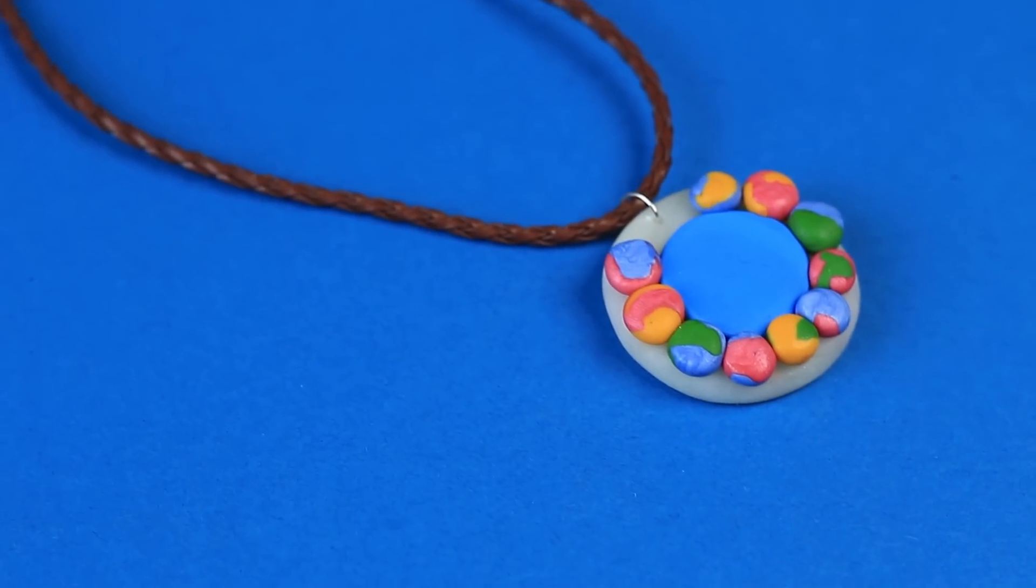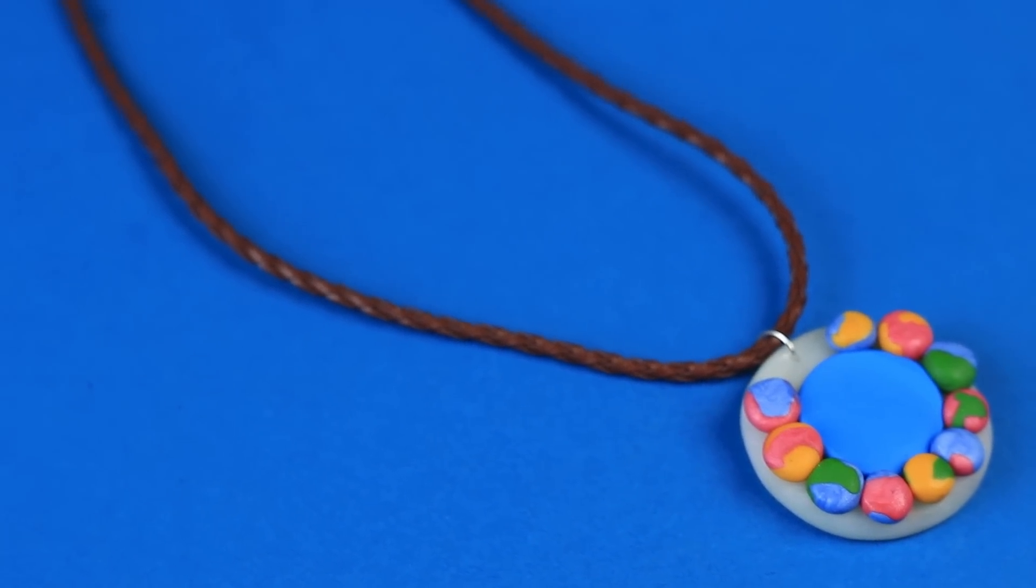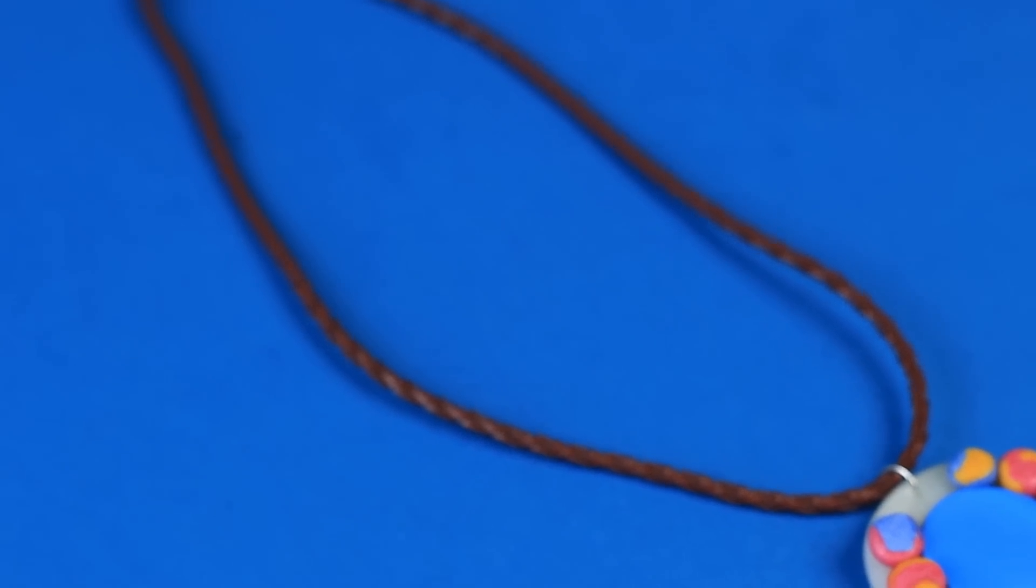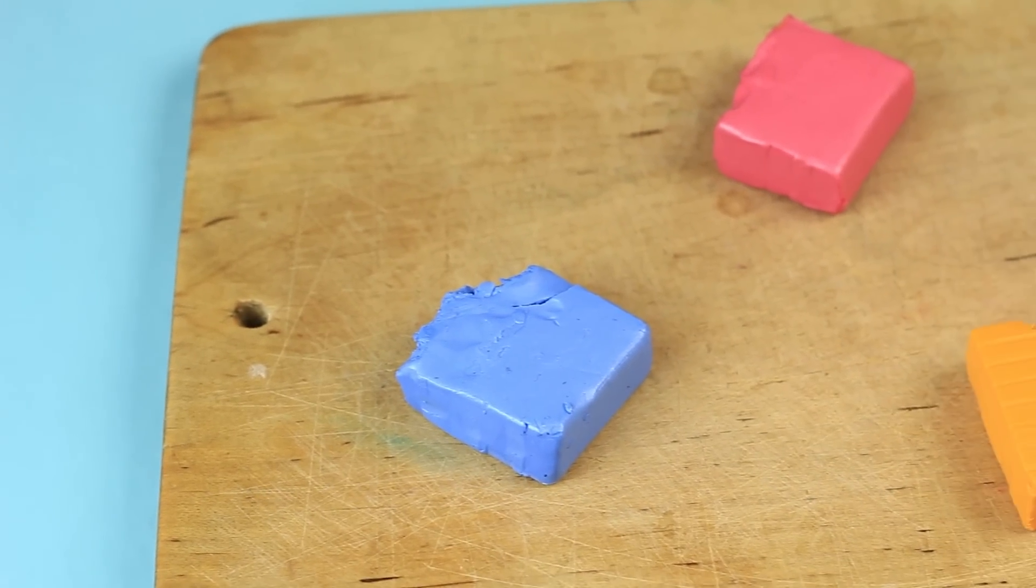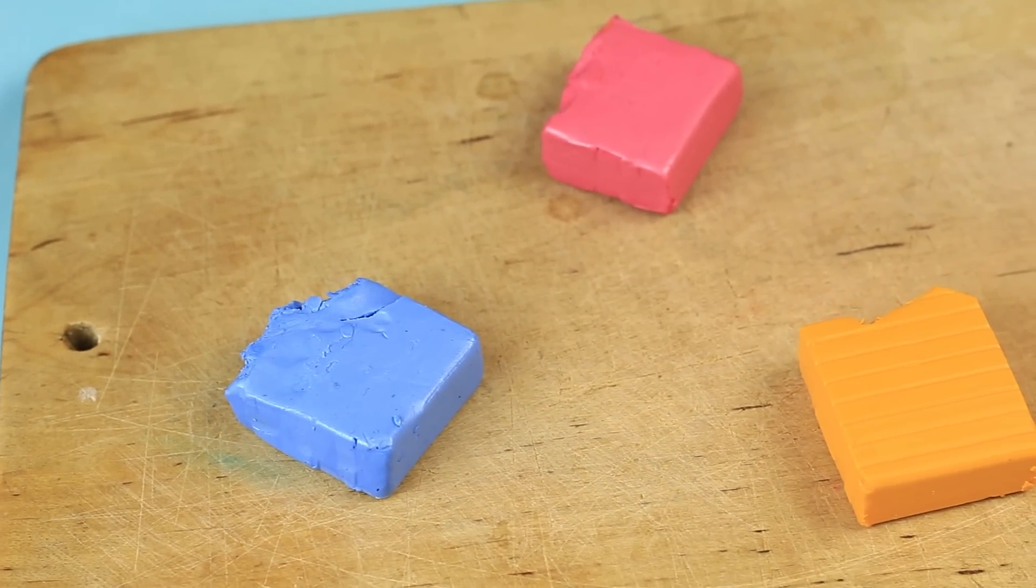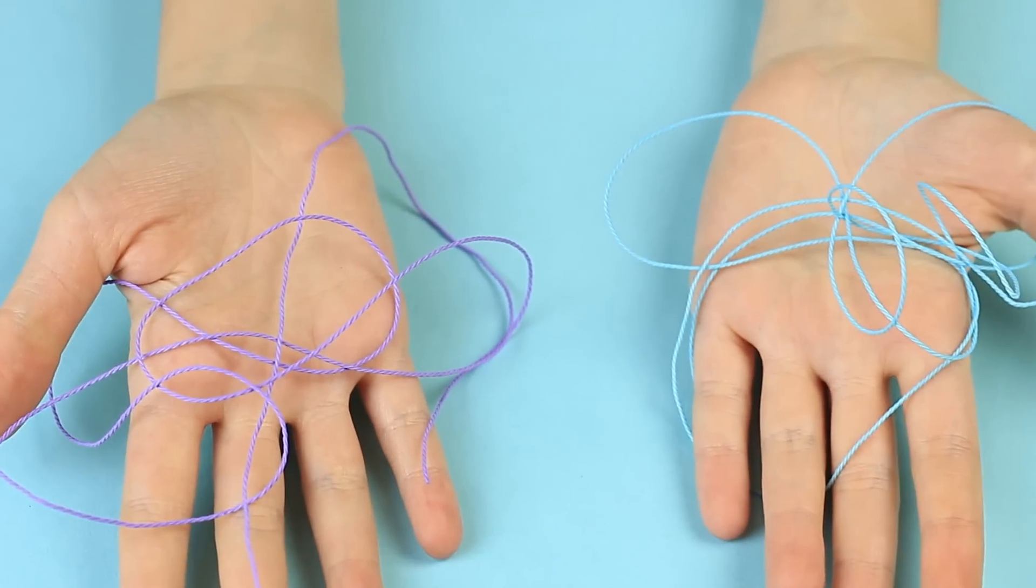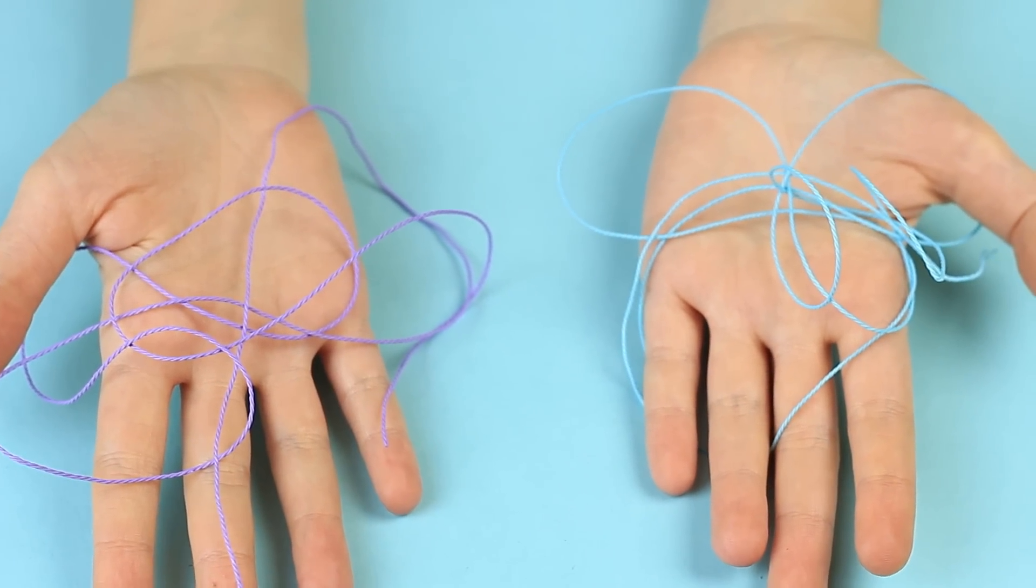The cute fingerprint pendant keeps a secret and thus can become a very special gift for a close friend. Let's make a fingerprint necklace. We'll need polymer clay of blue, pink and ochre color. Two thin silk cords of lavender lilac and blue shades.